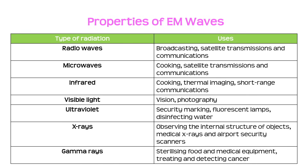We need to know the uses of different types of electromagnetic radiation. Radio waves: broadcasting, satellite transmissions and communications. Microwaves: cooking, satellite transmissions and communications. Infrared: cooking, thermal imaging and short-range communications. Visible light (red, orange, yellow, green, blue, indigo, violet): vision and photography. Ultraviolet: security marking, fluorescent lamps and disinfecting water. X-rays: observing internal structure of objects, medical X-rays and airport security scanners. Gamma rays: sterilising food and medical equipment by killing bacteria, and treating and detecting cancer.